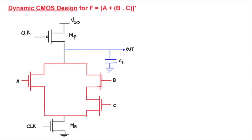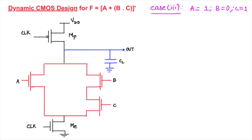Now let us consider one more case where the input values create a low-resistance path between the output and ground, pulling down the pre-charged value. For Case 3, consider a = 1, b = 0, c = 1.